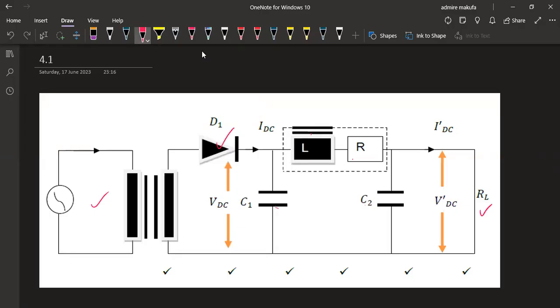It consists of a filter which is referred to as a reservoir capacitor connected across a rectifier, then the rectifier output and inductor in series with another filter smoothing capacitor.